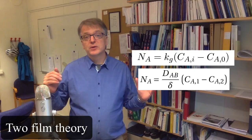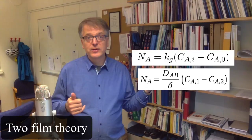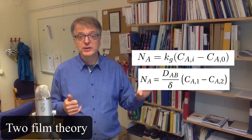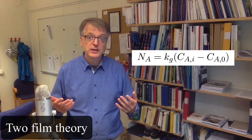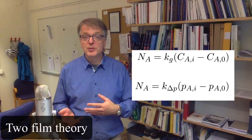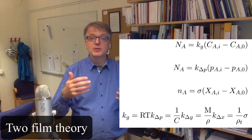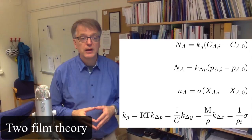Mass transfer coefficients may have different units because you can express the difference between the two phases in different ways. If you express it as a difference in concentration, you get one numerical value and unit. If you express the difference as a difference in partial pressure, you get another unit and numerical value. Or if you use the unit kilogram of water per kilogram of dry air for moisture content, you get yet another unit and numerical value. But they are all related since we describe the same system, so if you calculate one you can calculate the others.